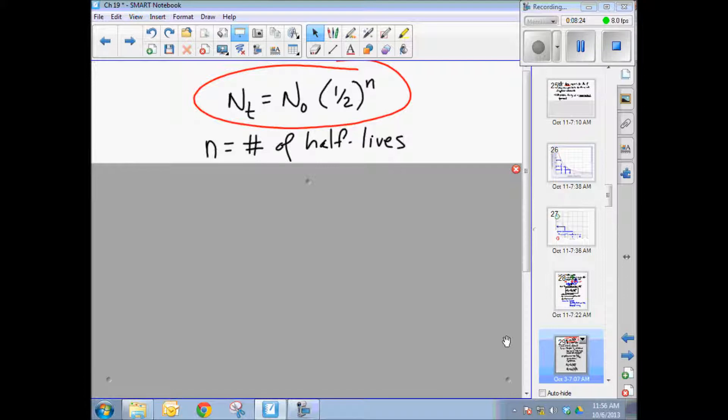Now, the only tricky part here comes when n is not a nice round number. What if the number of half lives is not two half lives or three half lives? That's easy. You're dividing by two or multiplying by one half two times or three times, depending on the number of half lives. What if it's not a perfectly nice round number?